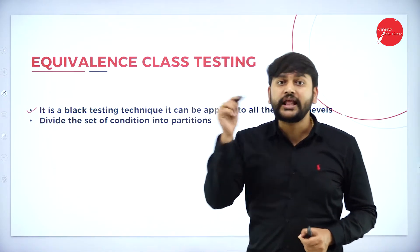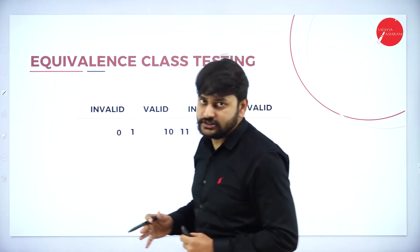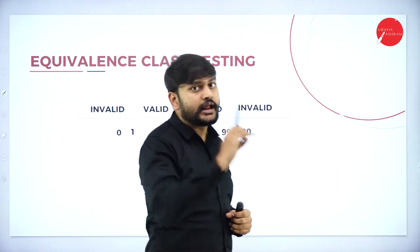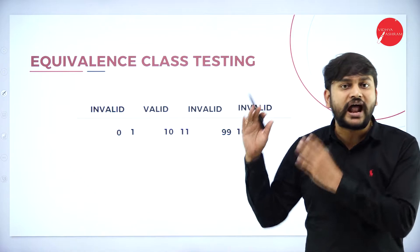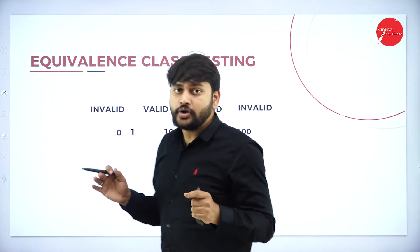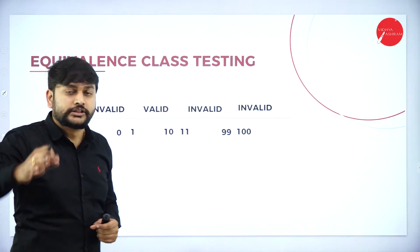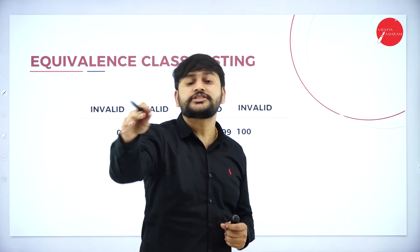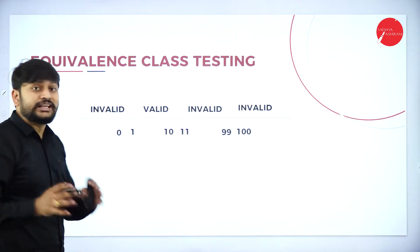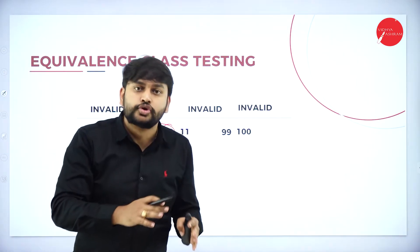Let's understand this concept with an example. I have an airlines company with a flight, and for that flight I can book only 10 tickets. So let's apply the concept of equivalence class testing here. I am writing that the ticket numbers range from 1 to 10 — this is what I will call a valid partition.